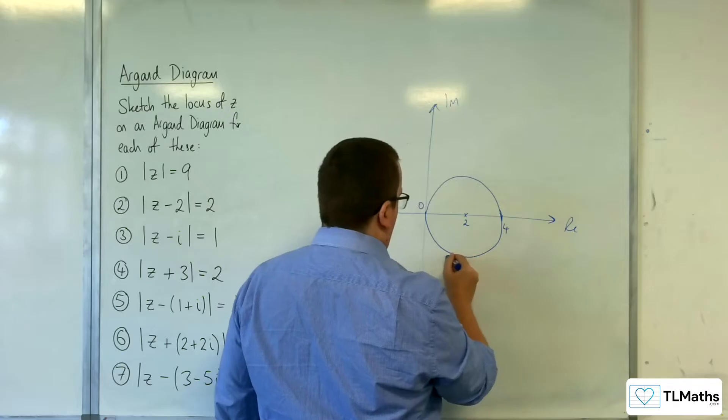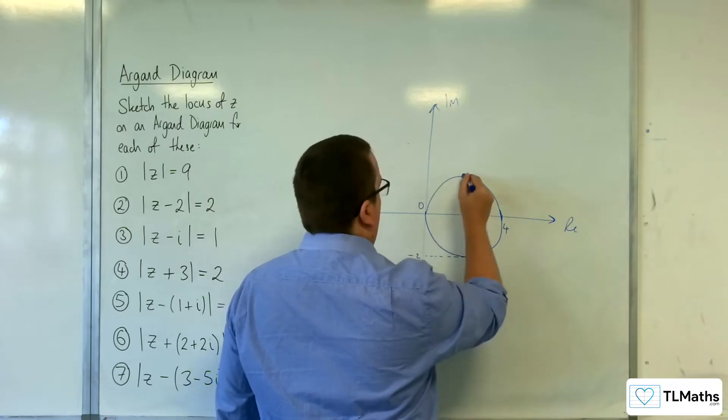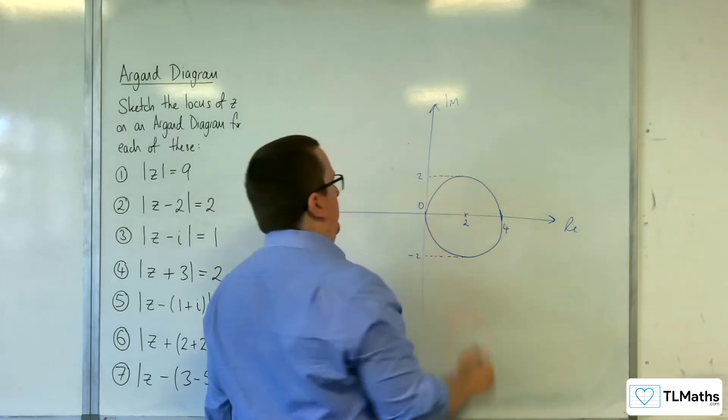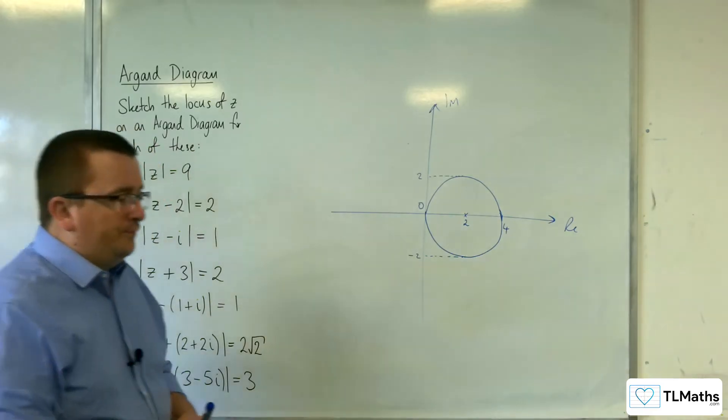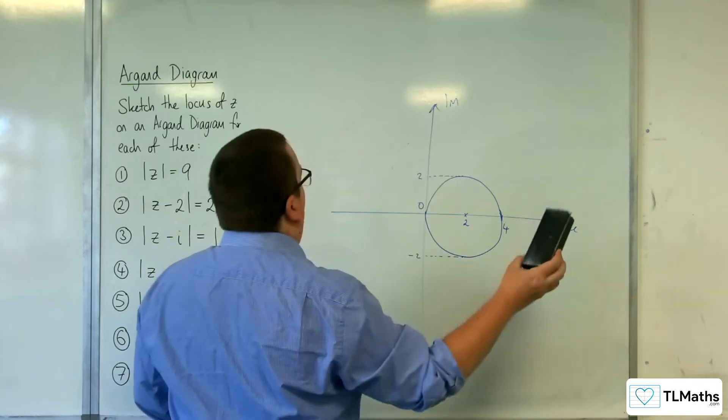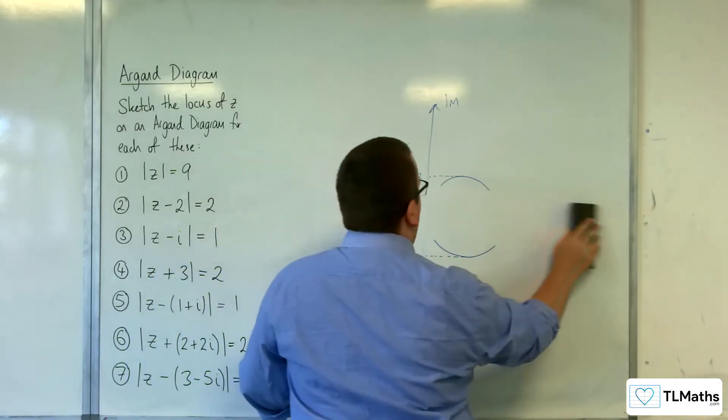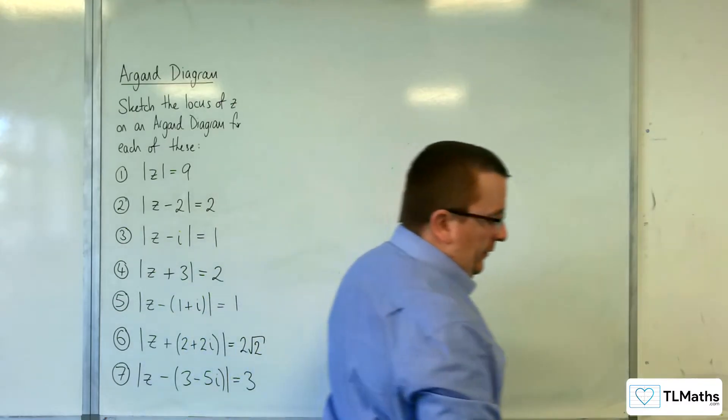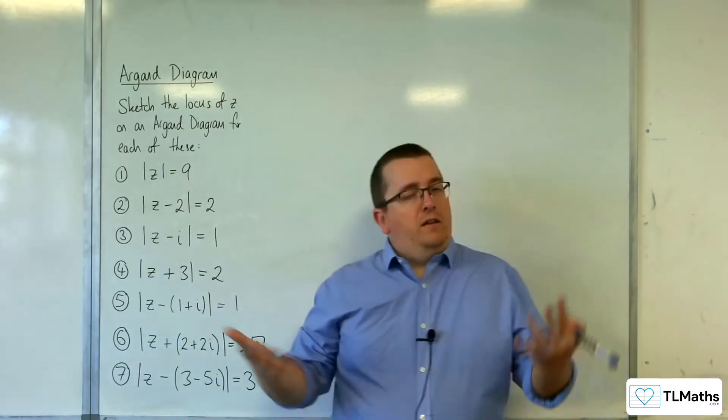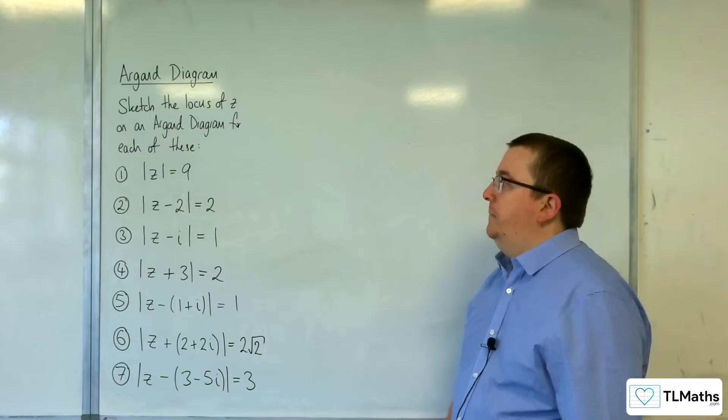At this point would be at minus 2. That point would be at 2, and that's what my circle would look like. I would say, if you're ever unsure with your circle drawing skills, then take a pair of compasses into the exam. Why not?